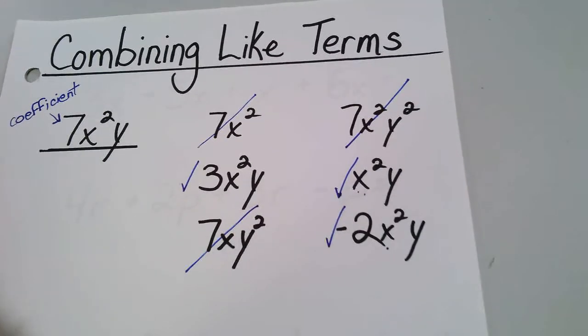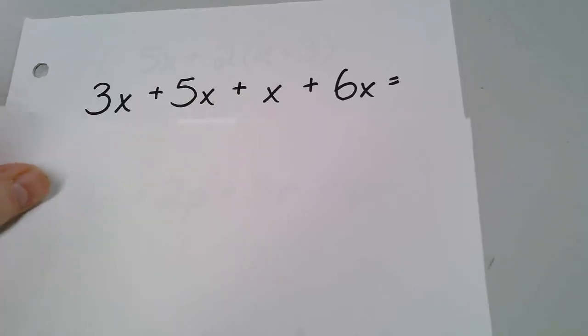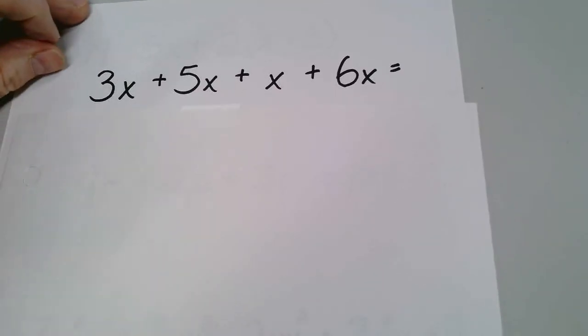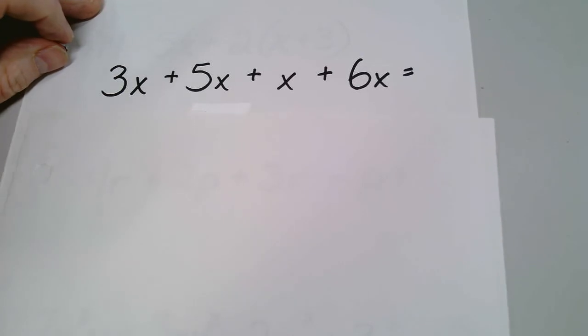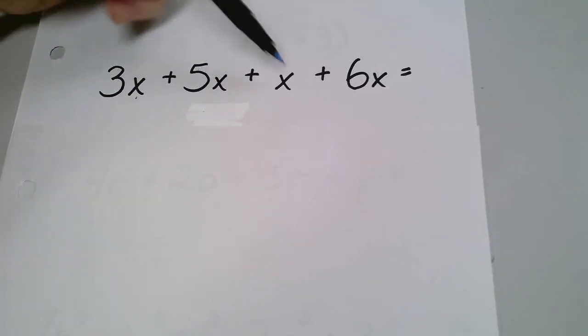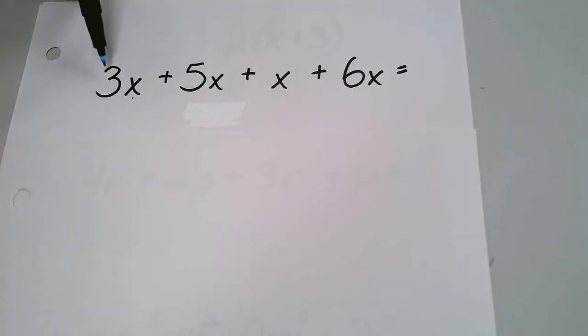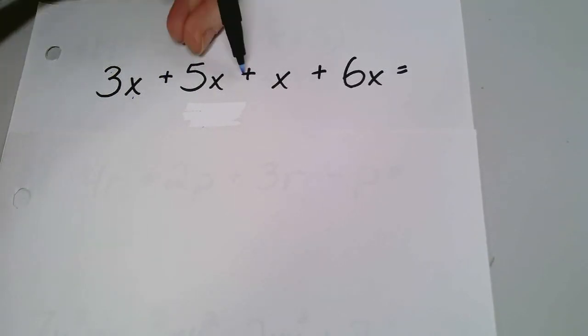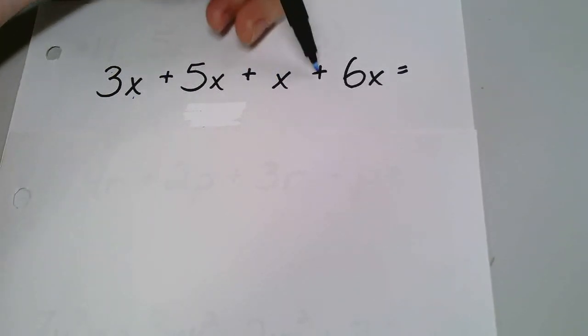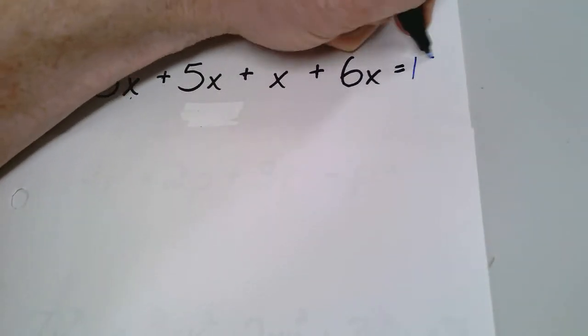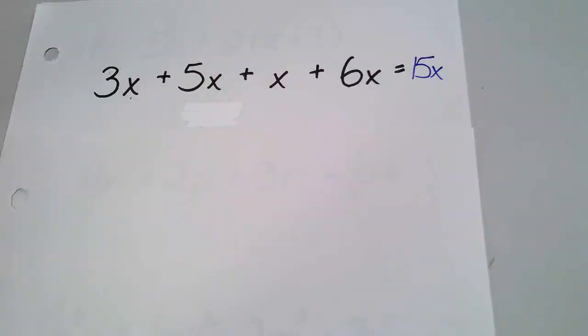Let's look at some more examples here. Got this question. All of the family names are the same for all the terms. They all belong to the x family. And because they belong to the x family, we can group them together. We've got three here, we have five more, that makes eight. Add one more makes nine. Add six more, and you have 15. And that's our answer.